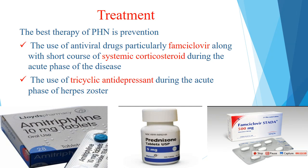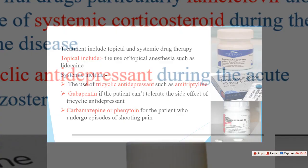Treatment of post-herpetic neuralgia: the best therapy is prevention. During the acute herpes shingles infection, use of antiviral drugs — particularly famciclovir — along with a short course of systemic corticosteroids during the acute phase, reduces the incidence of post-herpetic neuralgia. Tricyclic antidepressants used during the acute phase of herpes zoster also reduce the incidence of post-herpetic neuralgia. The best treatment is prevention of this shooting pain after the herpes shingles virus.